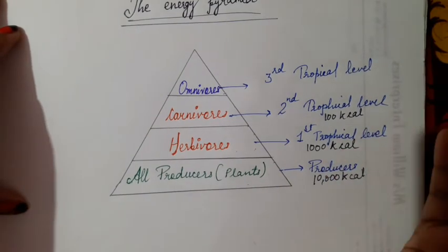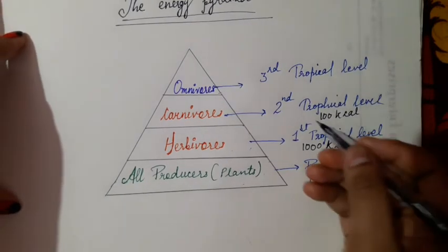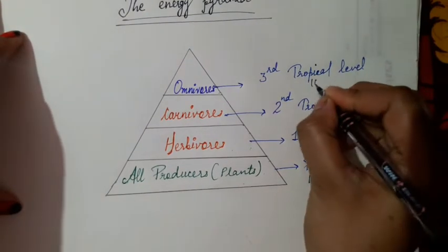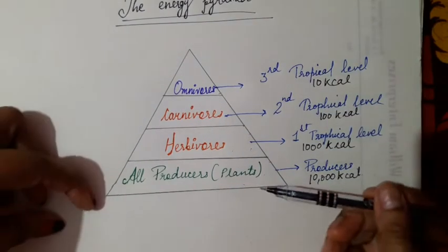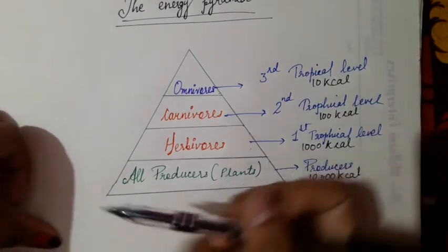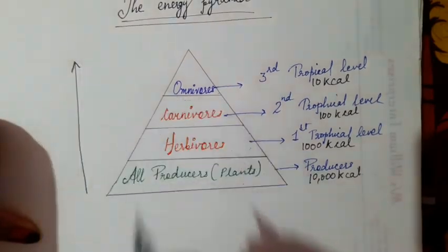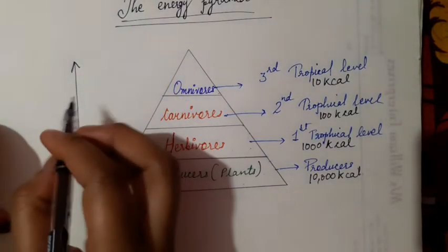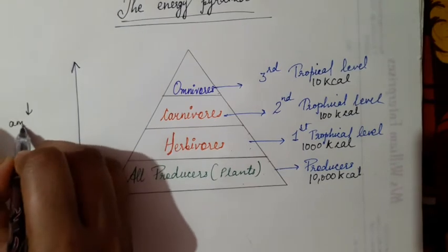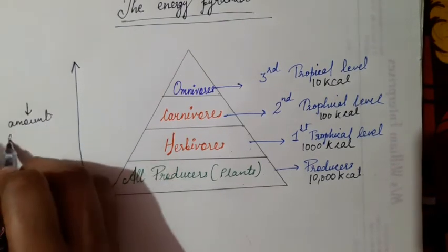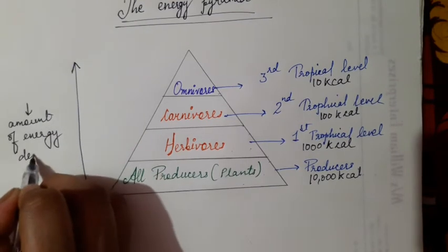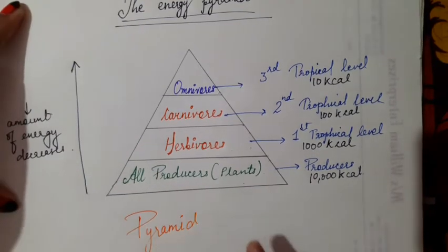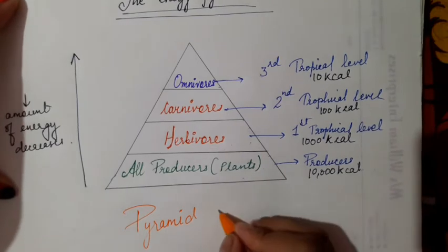The rest of the calories is being used up in the form of heat. Omnivores get even lesser, which is 10 kilocalories. So what is exactly happening? As the trophic level is increasing, the amount of energy decreases. This is what is called as the pyramid of energy.